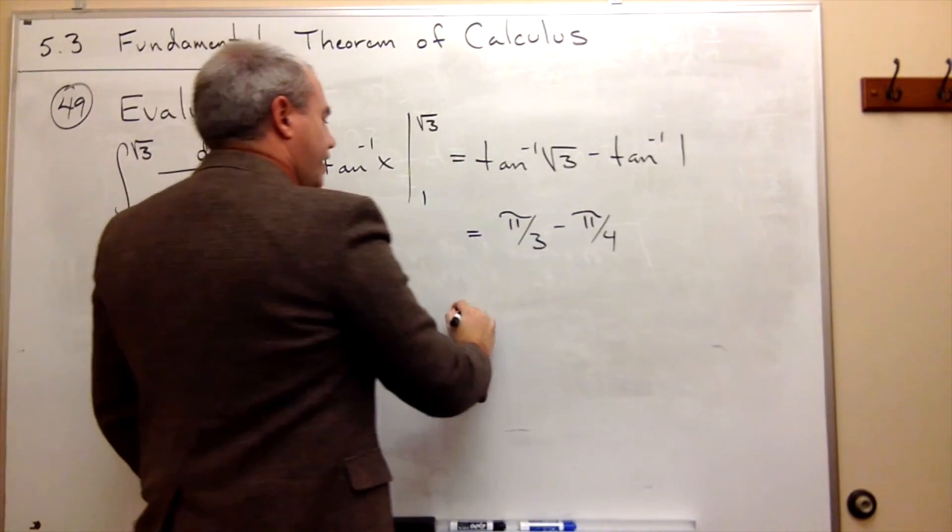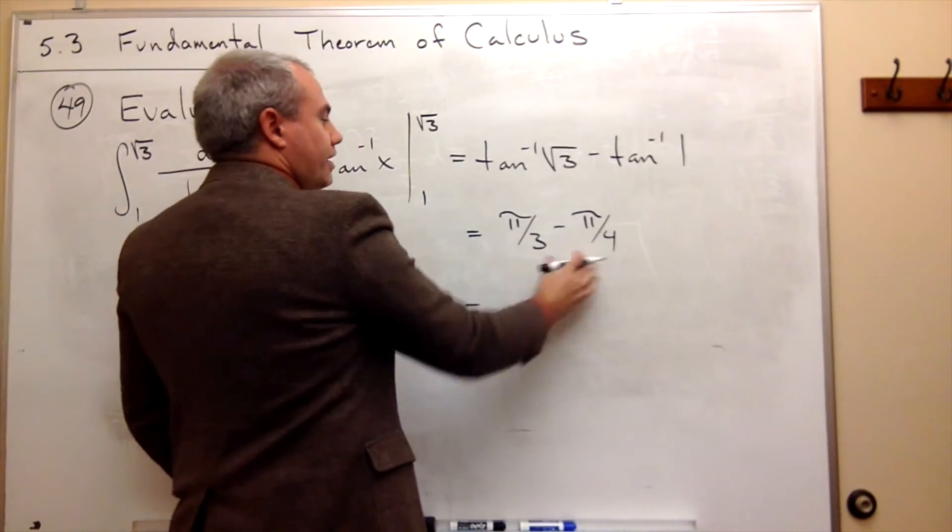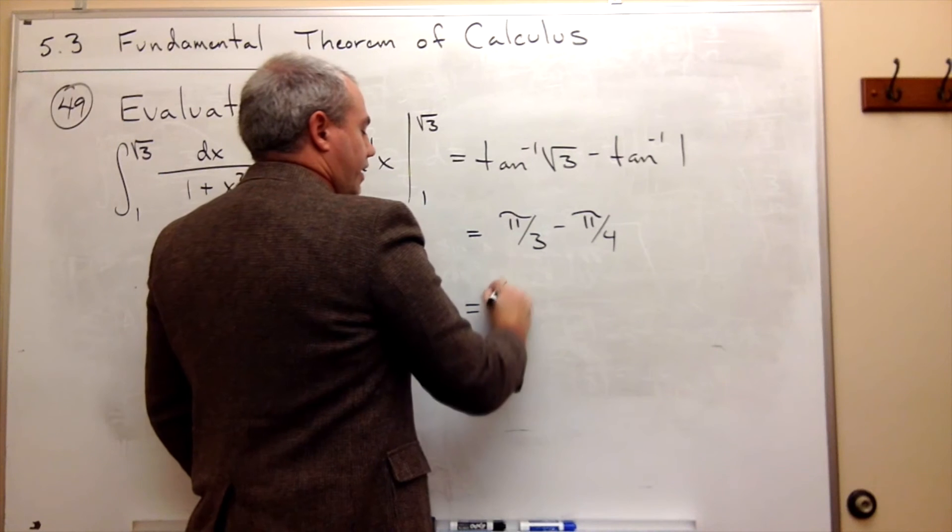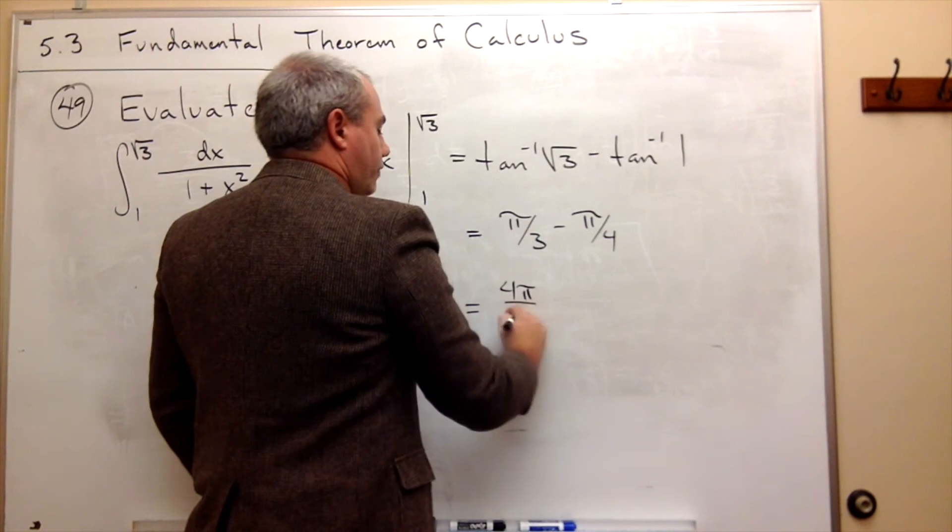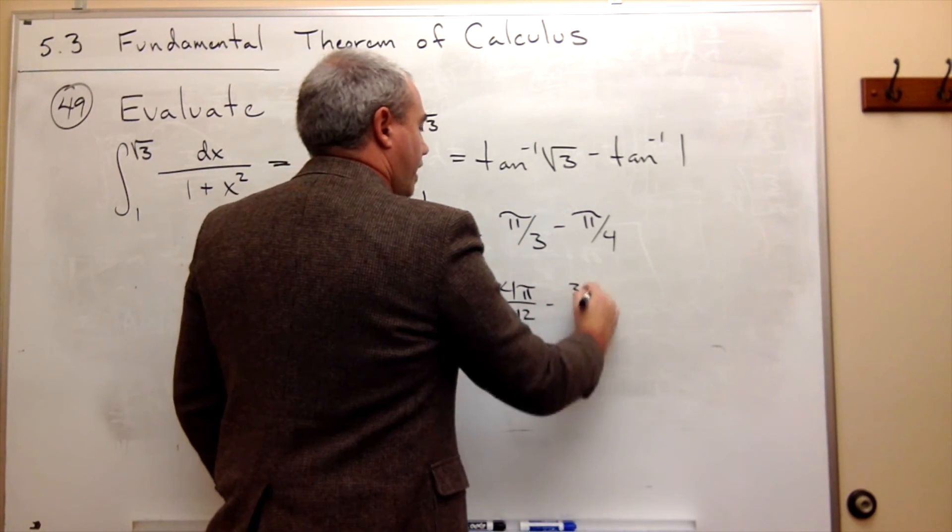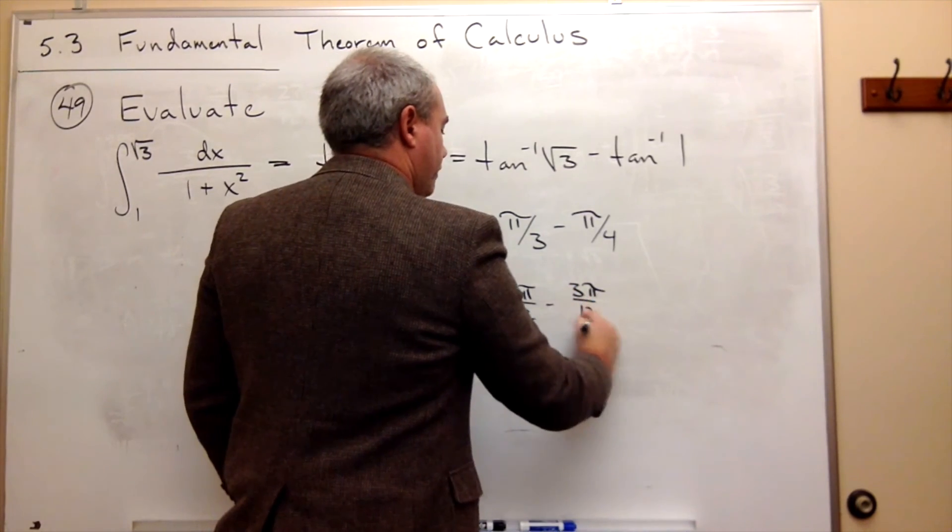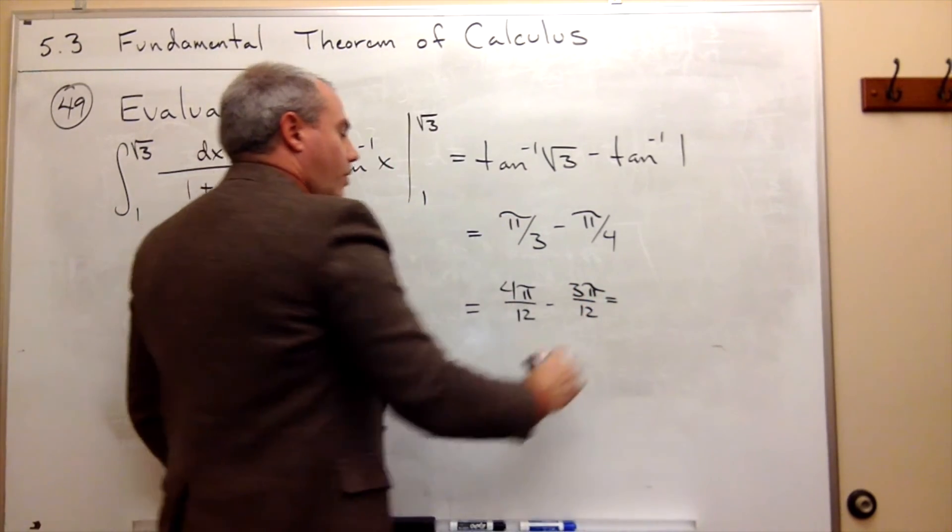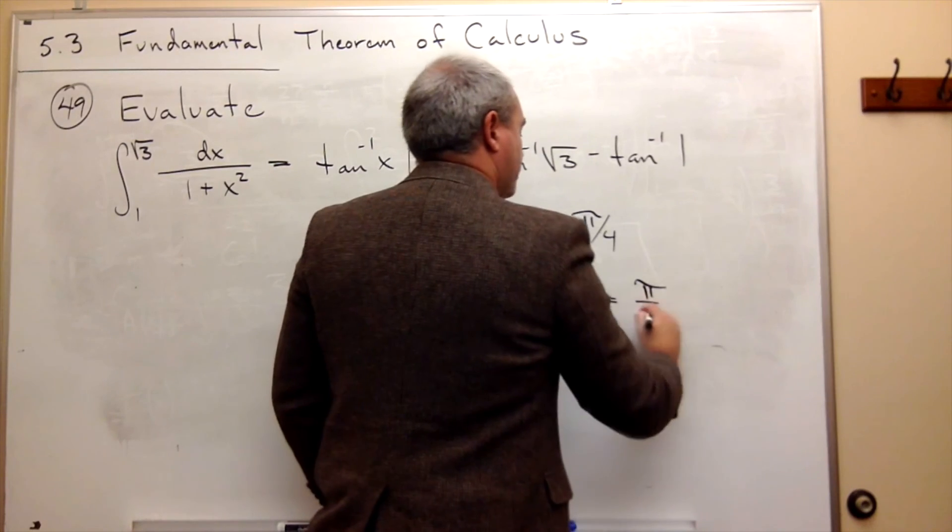And if we wanted to get a common denominator, we could. It's 12. And so I get that 4 pi over 12 minus 3 pi over 12 is equal to pi over 12.